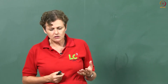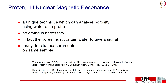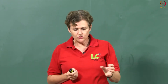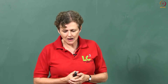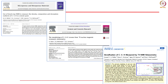Proton or 1H — that is the nucleus of the hydrogen atom, a proton — nuclear magnetic resonance is a unique technique which can analyze porosity using the water as a probe. You do not need to dry the sample at all; in fact, you can only interrogate pores that have water in them. The big advantage is because you do not have to dry and because it is a non-destructive technique, you can use the same sample and really look at how it evolves over time.